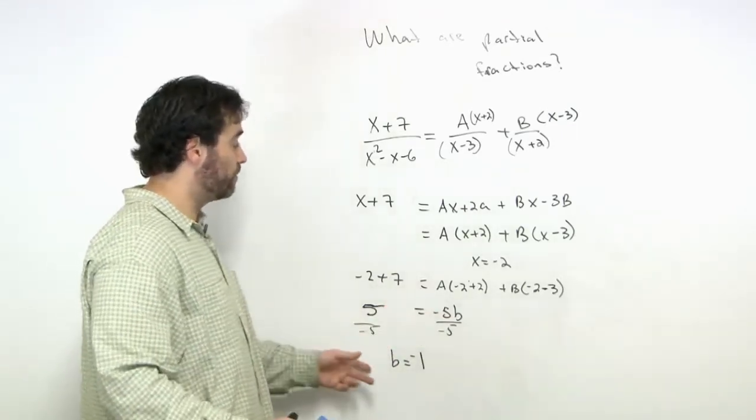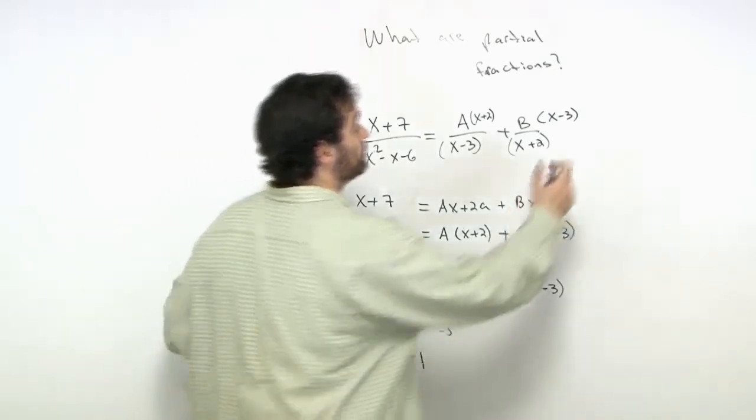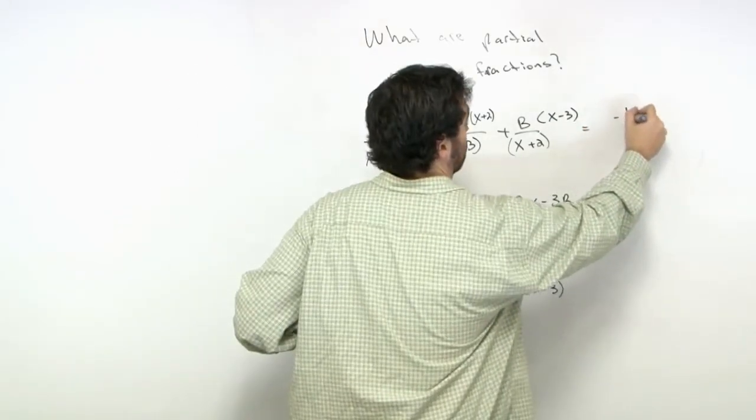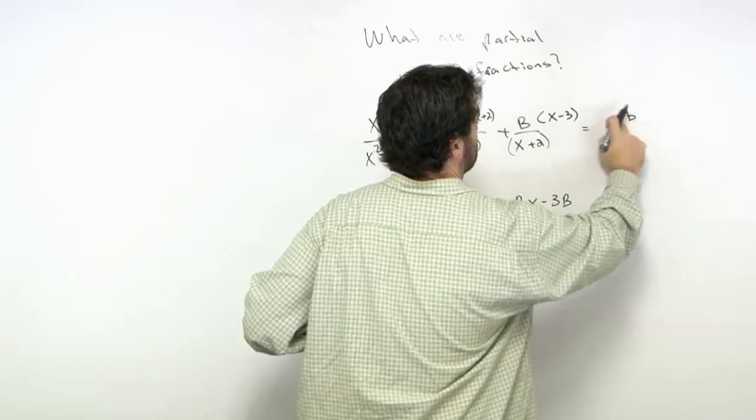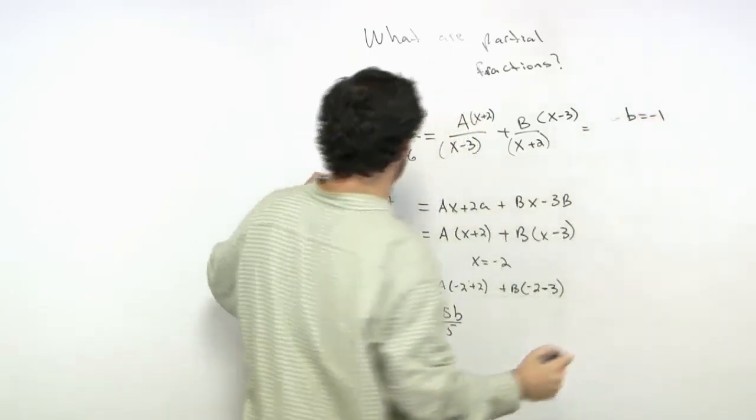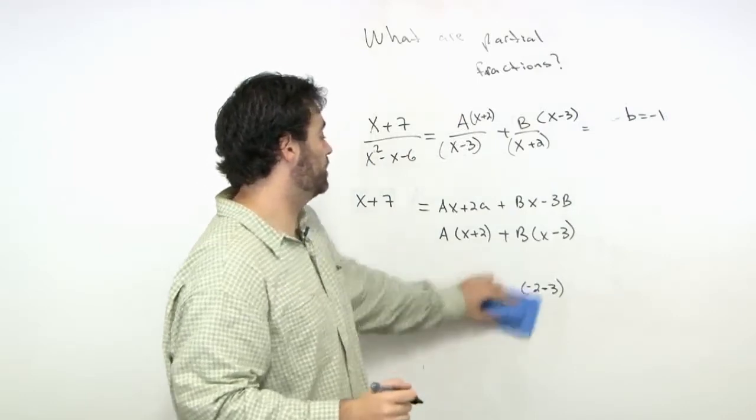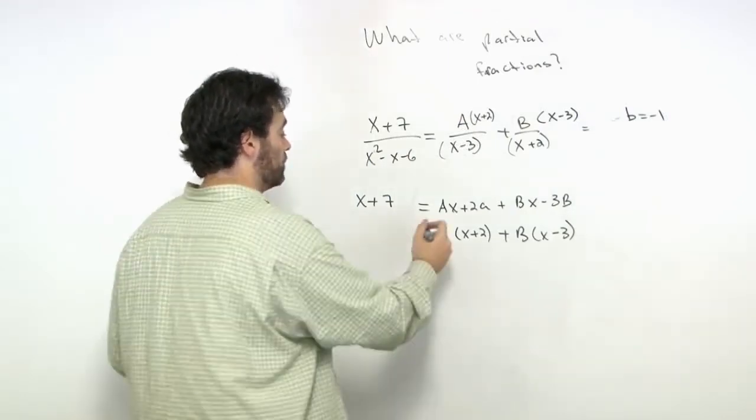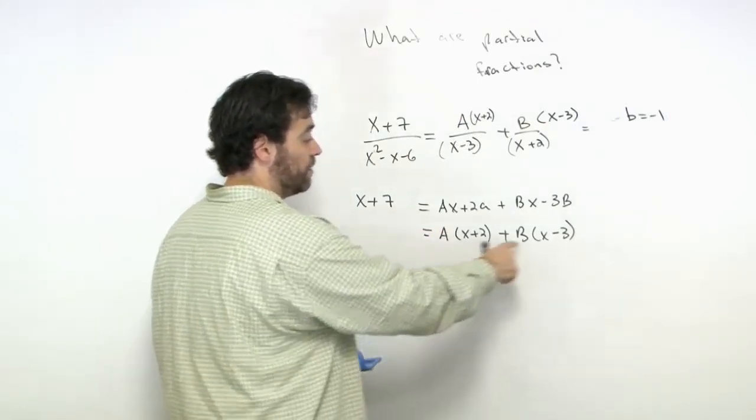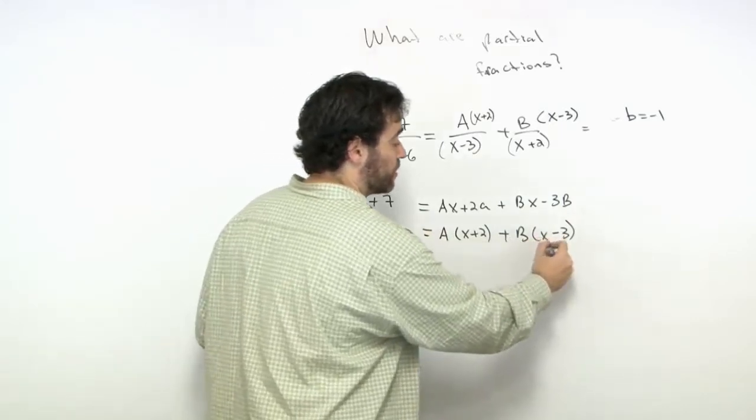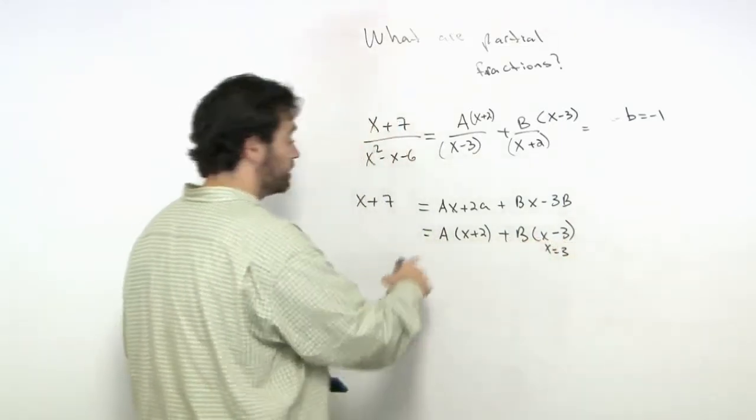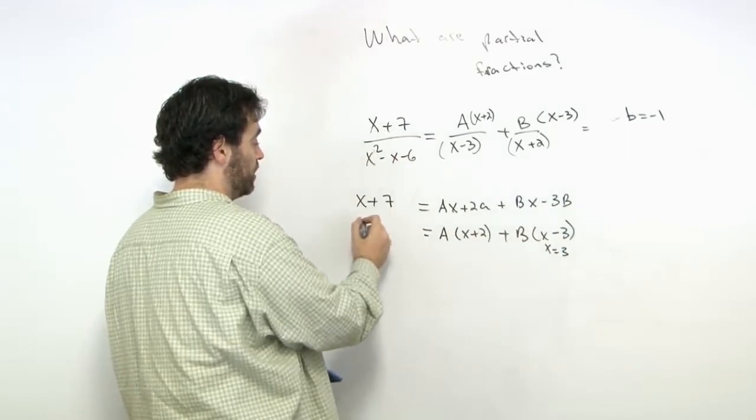Now we solve for A. B = -1. Using the same idea, we set x = 3 to make the second term zero, and plug that in.